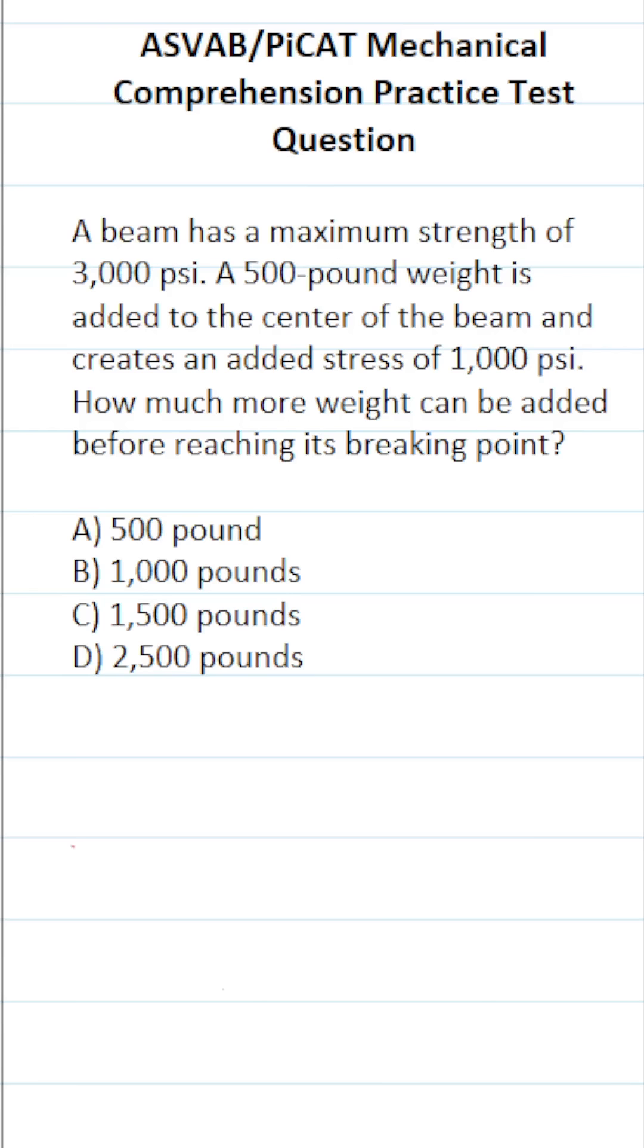This mechanical comprehension practice test question for the ASVAB and PiCAT says: A beam has a maximum strength of 3,000 PSI. A 500-pound weight is added to the center of the beam and creates an added stress of 1,000 PSI. How much more weight can be added before reaching its breaking point?